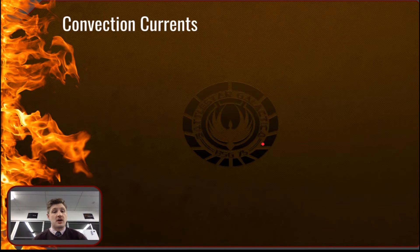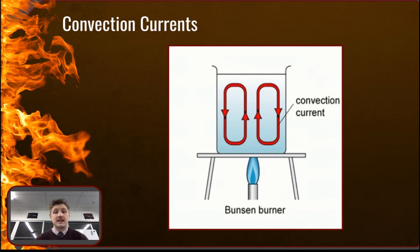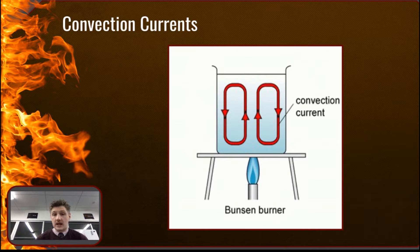Convection currents occur when the free-moving particles found in liquids and gases have heat energy added to them. The particles gain kinetic energy and as they collide into each other, they are pushed apart more — like two rugby players smashing into each other bouncing apart. The hotter area of the liquid becomes less dense, or lighter, and rises away from the heat source, just like that hot air balloon example.